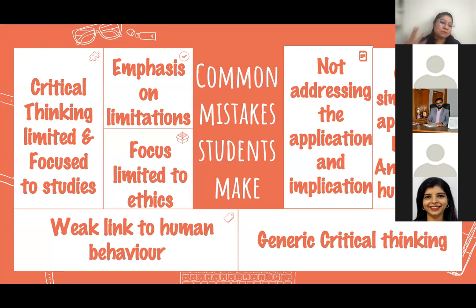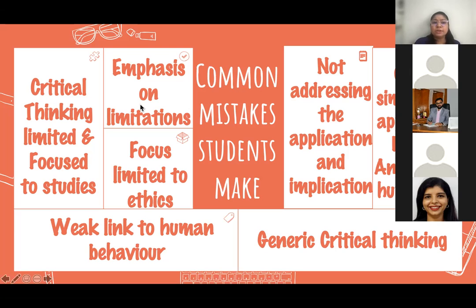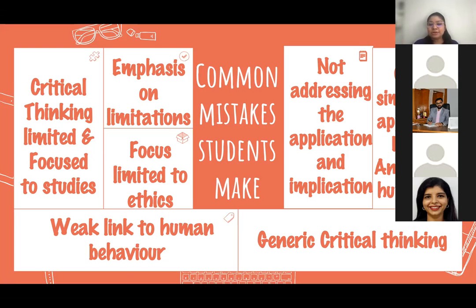The points I've collected are from subject reports and corrected papers available on the IBO. That's where I got my data for these common mistakes. When we look at critical thinking, it's very limited sometimes — only focused on the studies. There is a definite need to look at critical thinking about studies, strengths and limitations. But sometimes we emphasize only on the limitations of a particular study and don't go beyond that. Sometimes it's only limited to ethics. Sometimes we pick up questions, especially for animal research — if you take the HL extension for bio, there's a very weak link to human behavior.